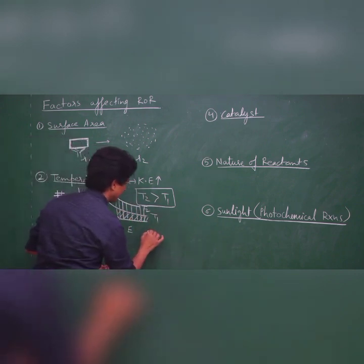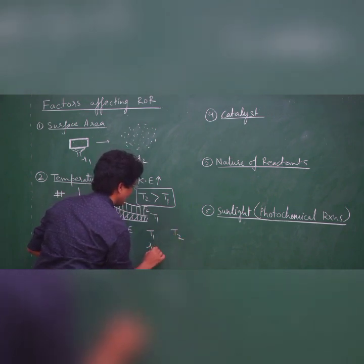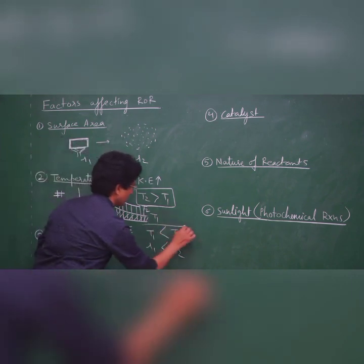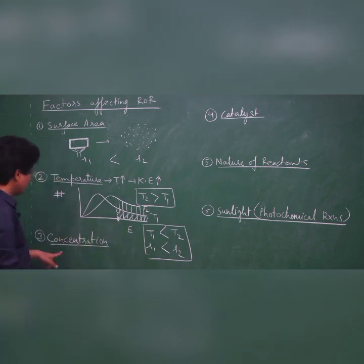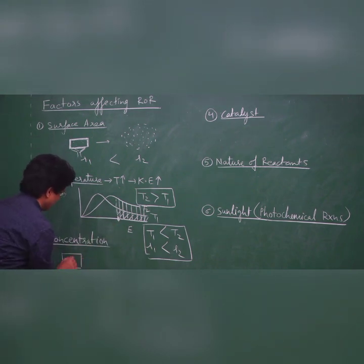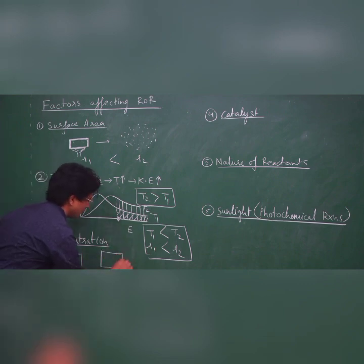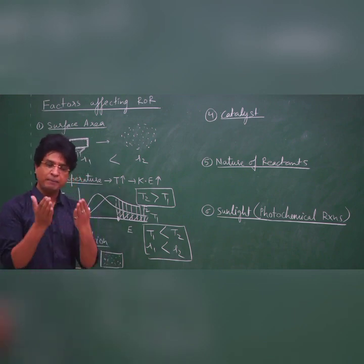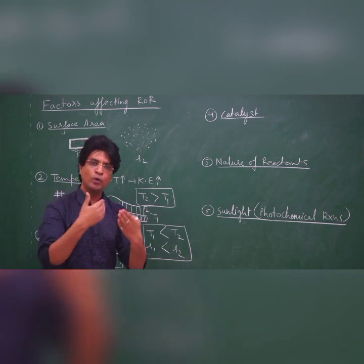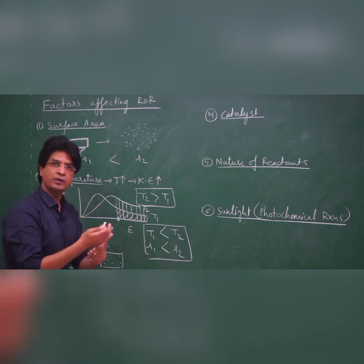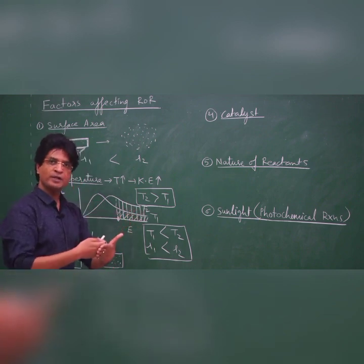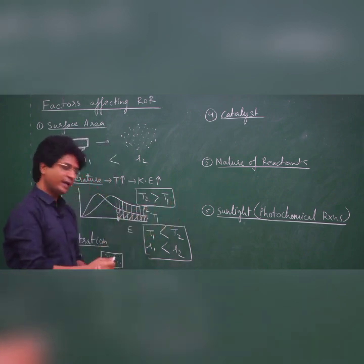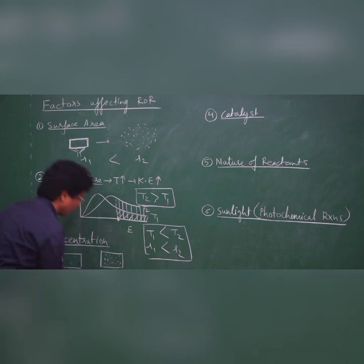That means we can increase the rate by increasing temperature. Now, come to concentration. If I have a few particles in a container versus many particles in the same container, more particles means higher frequency of collision. More frequency of collision means more rate of reaction. With fewer particles, probability of colliding is less, so rate is less. With more particles, they collide frequently and rate is higher. So R2 is more than R1 when concentration is higher.